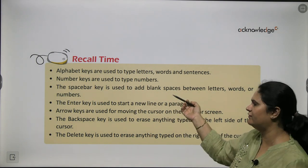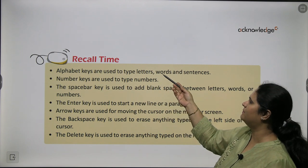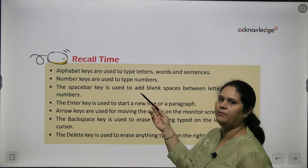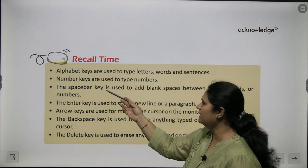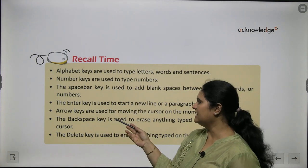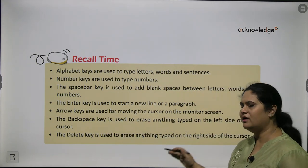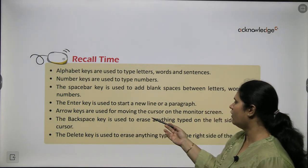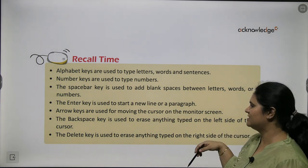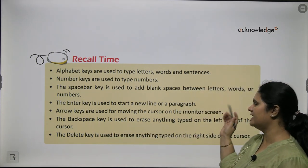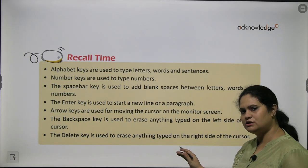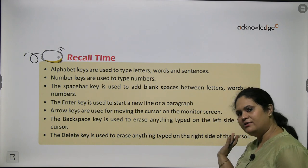Let us quickly recall whatever we have done in this chapter. Alphabet keys are used to type letters, words, and sentences. Number keys are used to type numbers. The space bar key is used to add blank spaces between letters, words, or numbers. The enter key is used to start a new line or a paragraph. Arrow keys are used for moving the cursor up, left, right, and down on the monitor screen. The backspace key erases anything typed on the left side of the cursor, and the delete key deletes anything on the right side of the cursor.